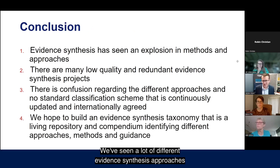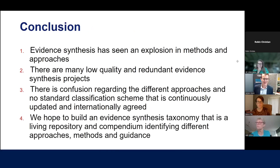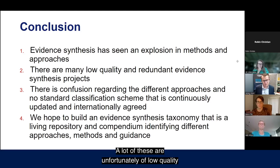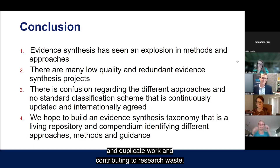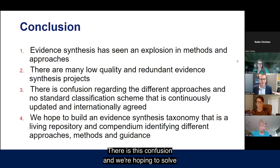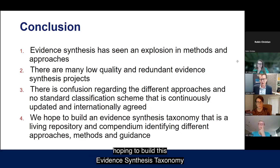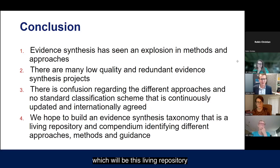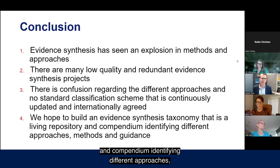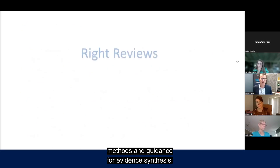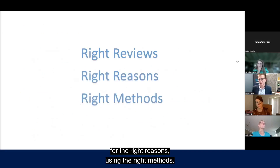In conclusion, we've seen a proliferation of evidence synthesis approaches in recent years, with many systematic reviews being published that are unfortunately of low quality, duplicate work, and contribute to research waste. There is no up-to-date, internationally agreed standard classification scheme, which contributes to confusion. This is driving us to build the Evidence Synthesis Taxonomy — a living repository and compendium identifying different approaches, methods, and guidance for evidence synthesis — all with the aim of making sure people are doing the right reviews for the right reasons, using the right methods.